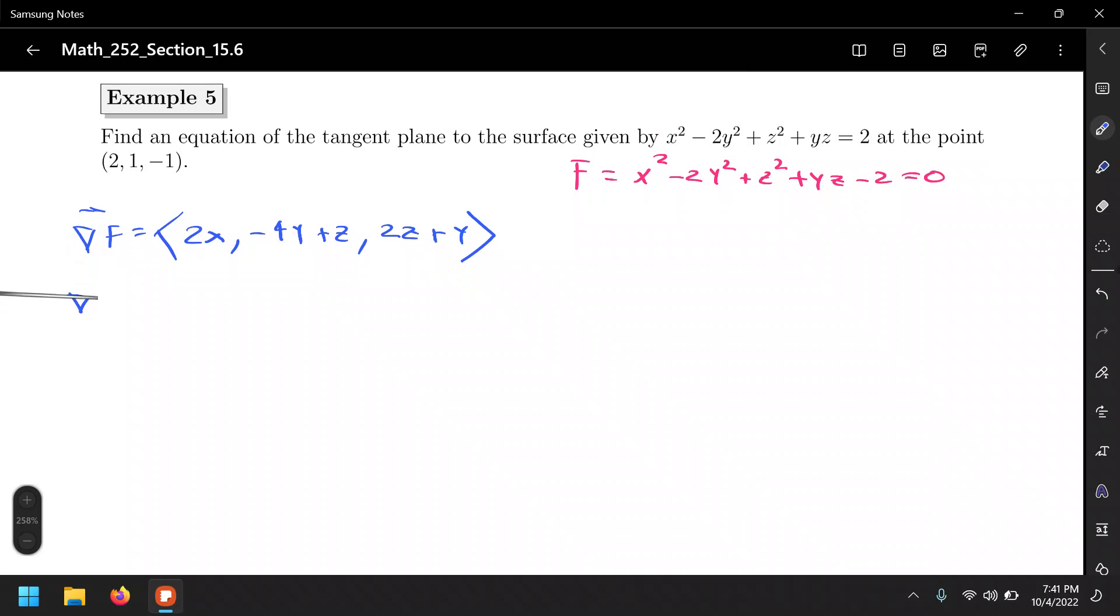And let's evaluate this at the corresponding point, that is (2, 1, -1). So this will be 2 times x which is 2, negative 4 times y which is 1 plus the z value which is negative 1, and 2z which is negative 1 plus y which is 1. So let's simplify this. That's going to be 4, is that negative 5? And is that negative 1? Alright, so that's the vector.